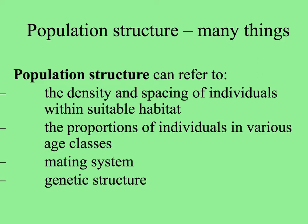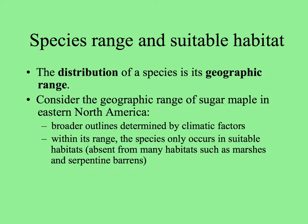Population structure may also refer to who mates with whom, or the mating system of the population, but it can also refer more specifically to the genetic structure — whether relatives are close to each other or far from each other — and how subpopulations are related to one another in the big picture. The geographic range of a species is the distribution of that species, and we can look at geographic range at a number of different scales.